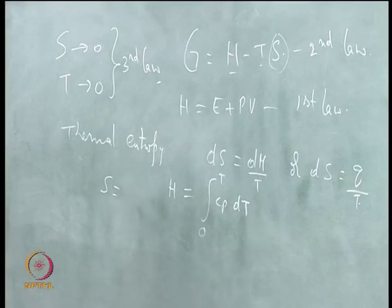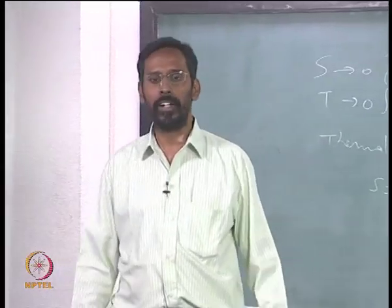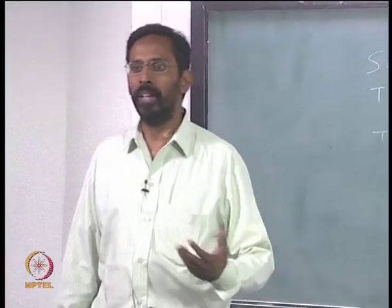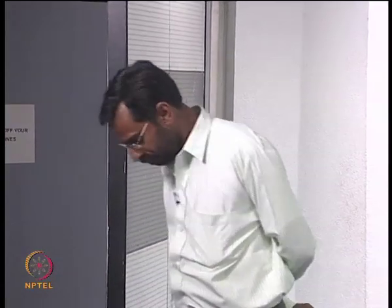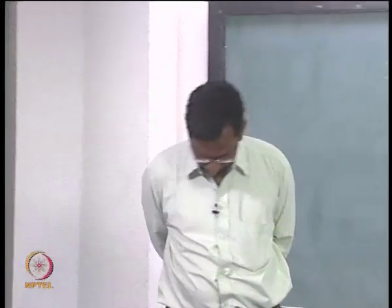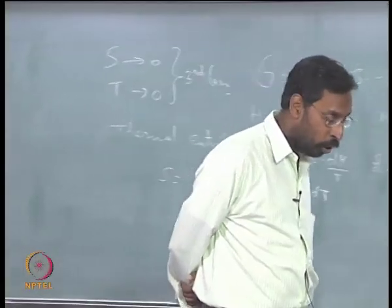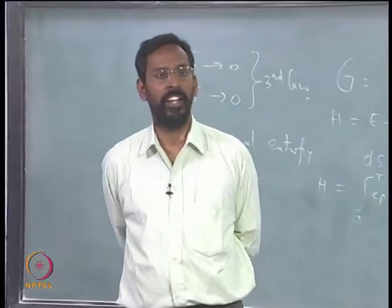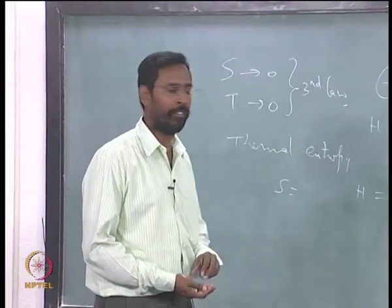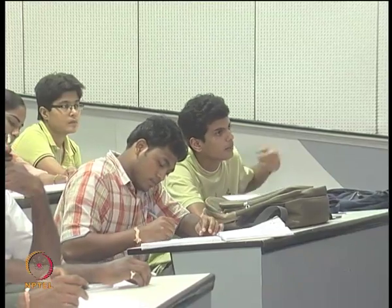And basically, c p is what we know, is the heat capacity of a material at constant pressure. And that is basically nothing but the amount of heat that is required to raise the temperature. That is how we define. And once we define h as integral c p d t, s automatically turns out to be integral c p d t by t.